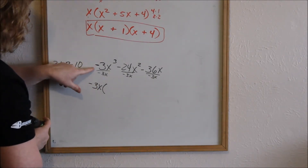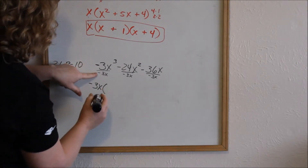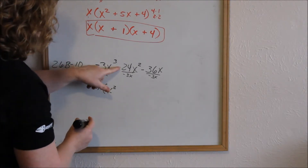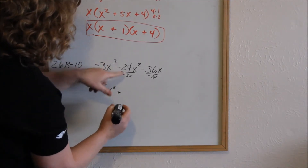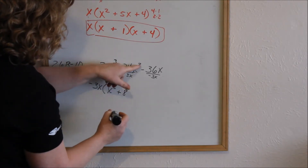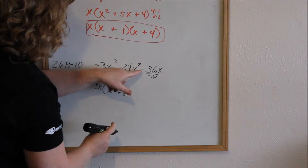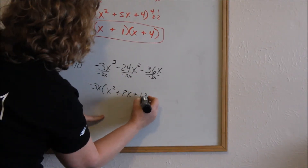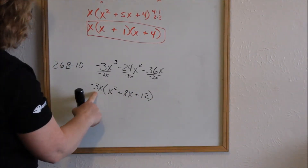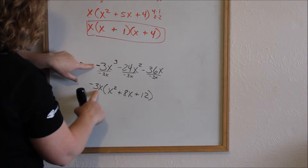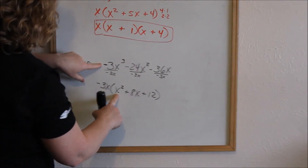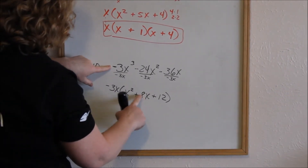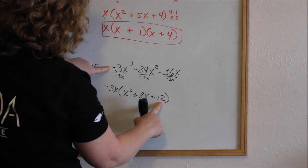If I divide the first term by negative 3x, a negative divided by a negative is positive, my 3's cancel, and I'm left with x squared. A negative divided by negative is positive; 24 divided by 3 is 8, and one x cancels leaving one x. A negative divided by negative is positive; 36 divided by 3 is 12, and my x's cancel. When I go back and distribute: negative 3x times x squared is negative 3x cubed; negative 3x times positive 8x is negative 24x squared; negative 3x times positive 12 is negative 36x.